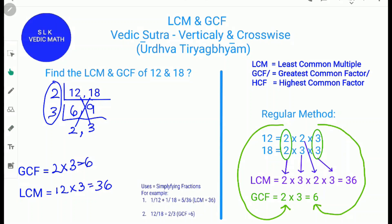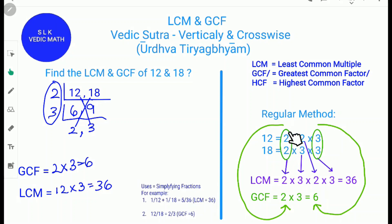Now let's see the regular method. First, find the factors of 12: 2 times 2 times 3 — 2 times 2 is 4, and 4 times 3 is 12. For 18: 2 times 3 times 3 — 2 times 3 is 6, and 6 times 3 is 18. For the GCF, circle the numbers that are the same: 2 and 3 are common, so 2 times 3 is 6, and the GCF is 6.